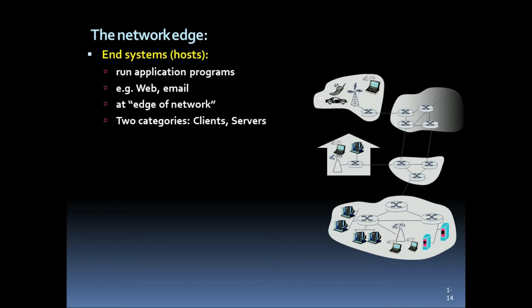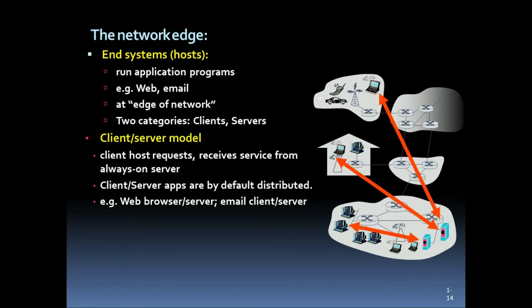The network edge consists of end systems that run application programs, for example web and email, at the edge of the network. There are two categories: clients and servers. In the client-server model, the client host requests and receives services from an always-on server. Client-server applications are by default distributed — for example, web browser, email client, etc. — and they request data from the server.